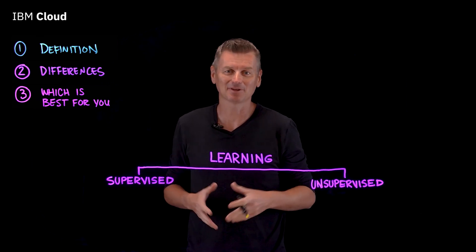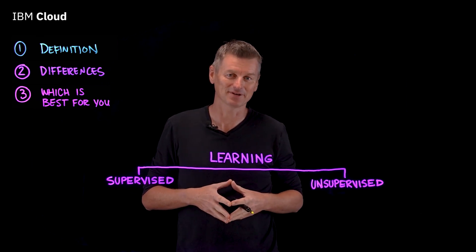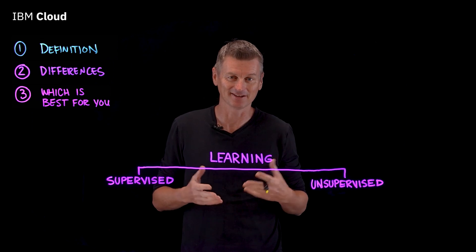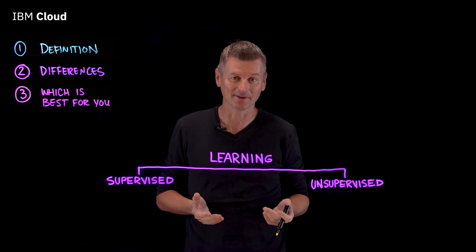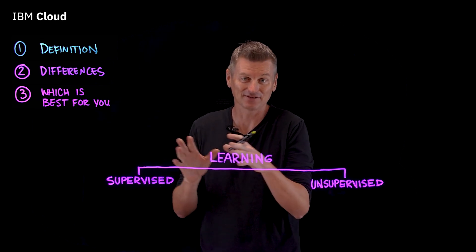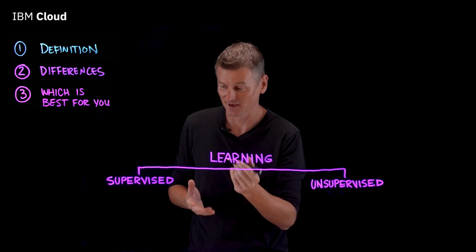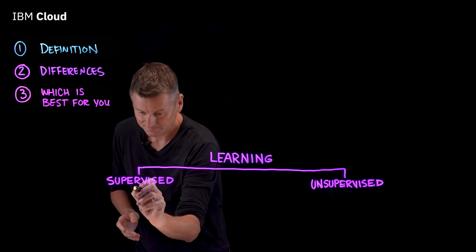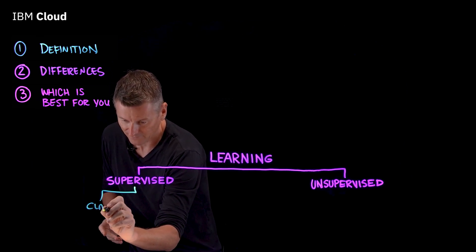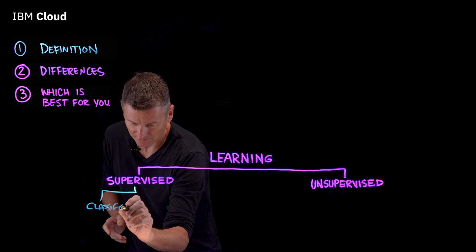Using labeled inputs and outputs, the model can measure its accuracy and learn over time. Supervised learning can be divided into a couple of subcategories. Firstly, there is classification.